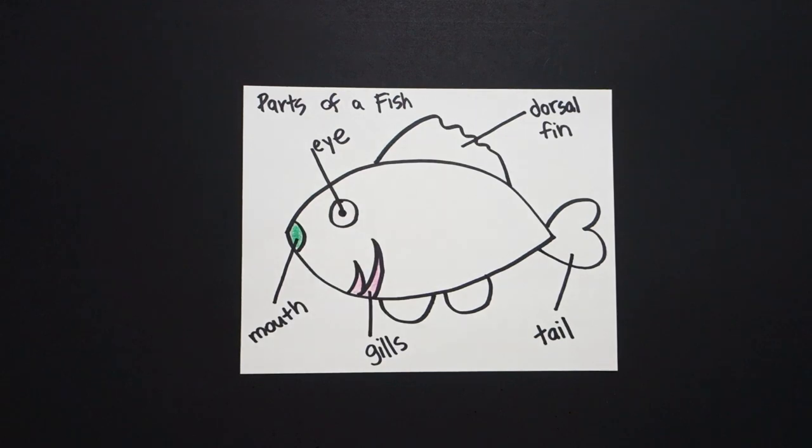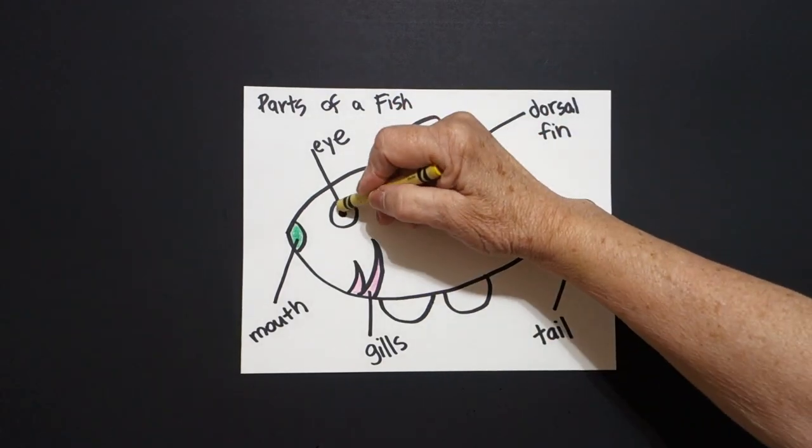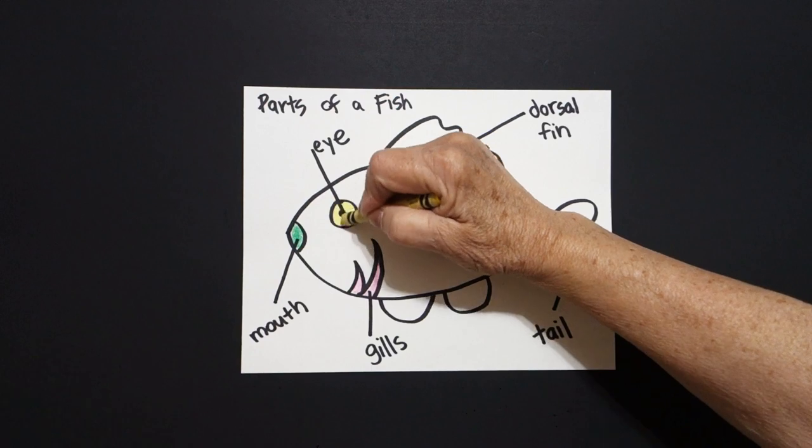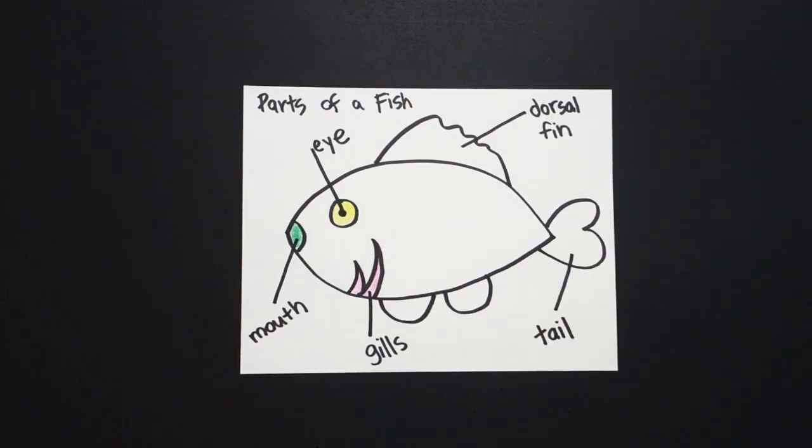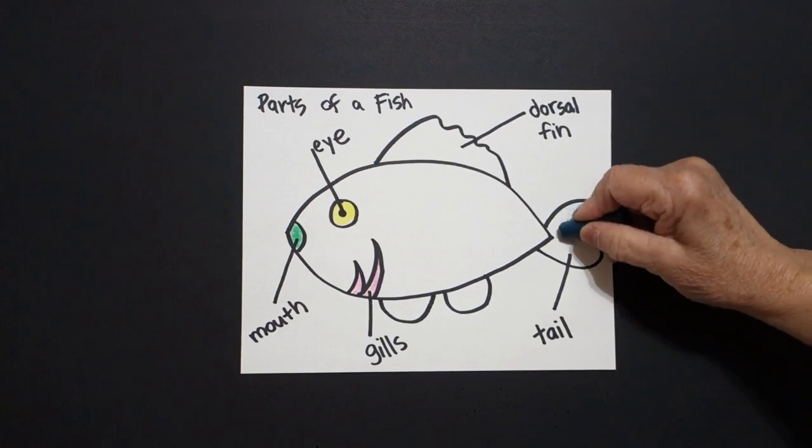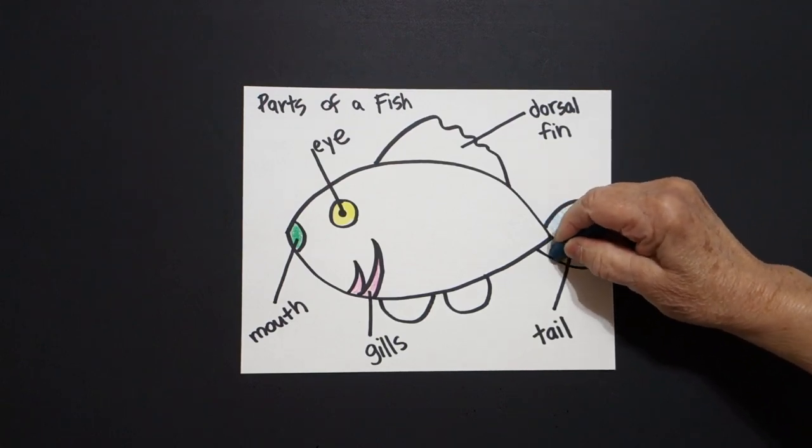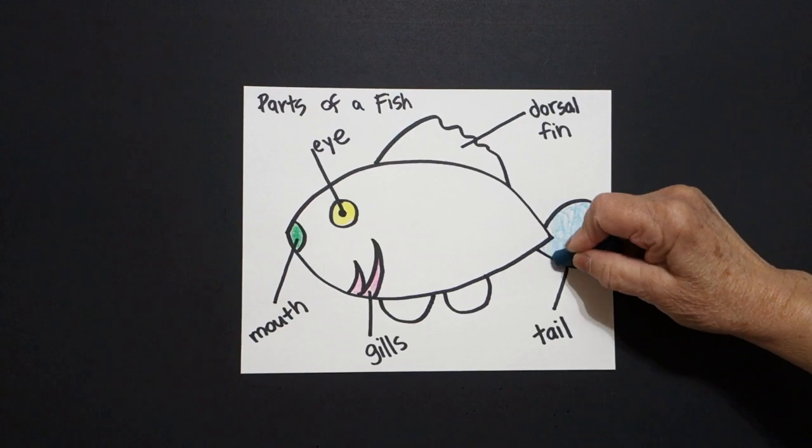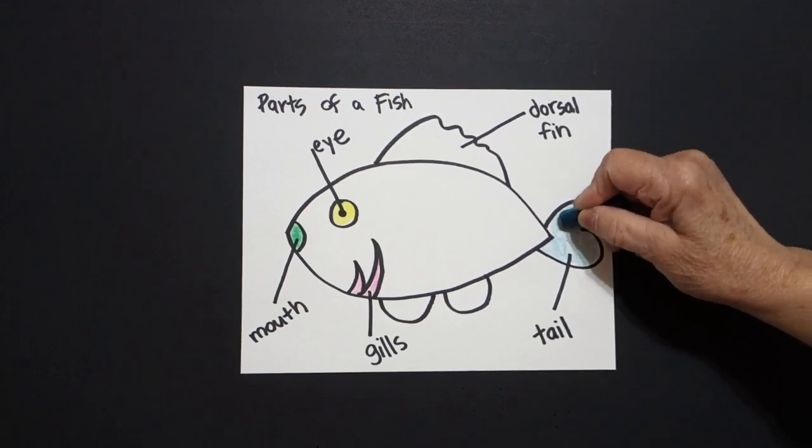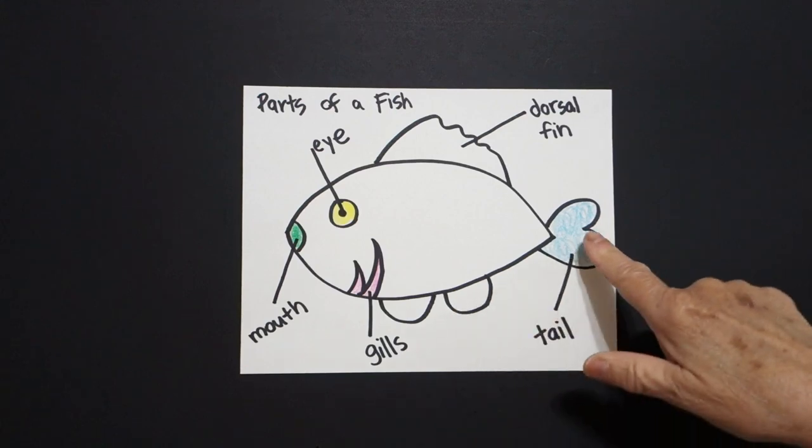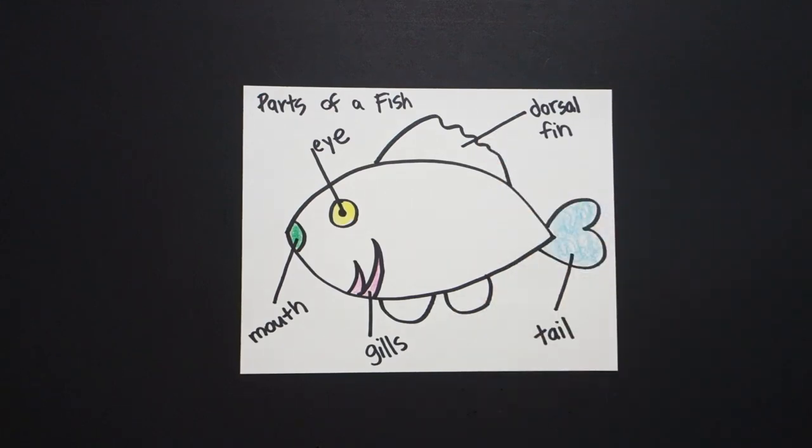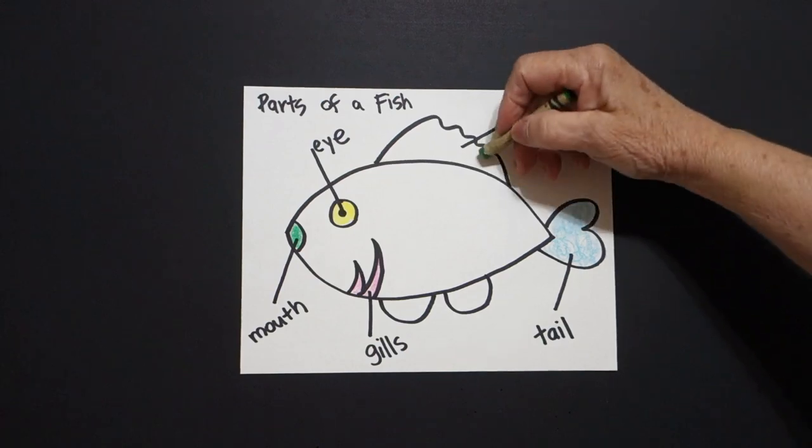Then I'm going to take yellow and I'm going to color around the outside part of my eye. That's how my fish can see. Next, I'm going to take blue-green turquoise. I'm going to loop-de-loop the inside of my fish's tail. Now, all of these fins and tails, this is how my fish navigate, makes its way through the water.